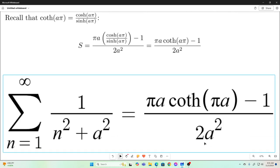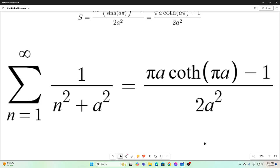And we have shown that the sum as n goes from one to infinity of one over n squared plus a squared is equal to pi times a times the hyperbolic cotangent of pi a minus one all over two a squared. And that is good for all real numbers a. All right, guys, I hope you enjoyed that. And we'll see you next time.